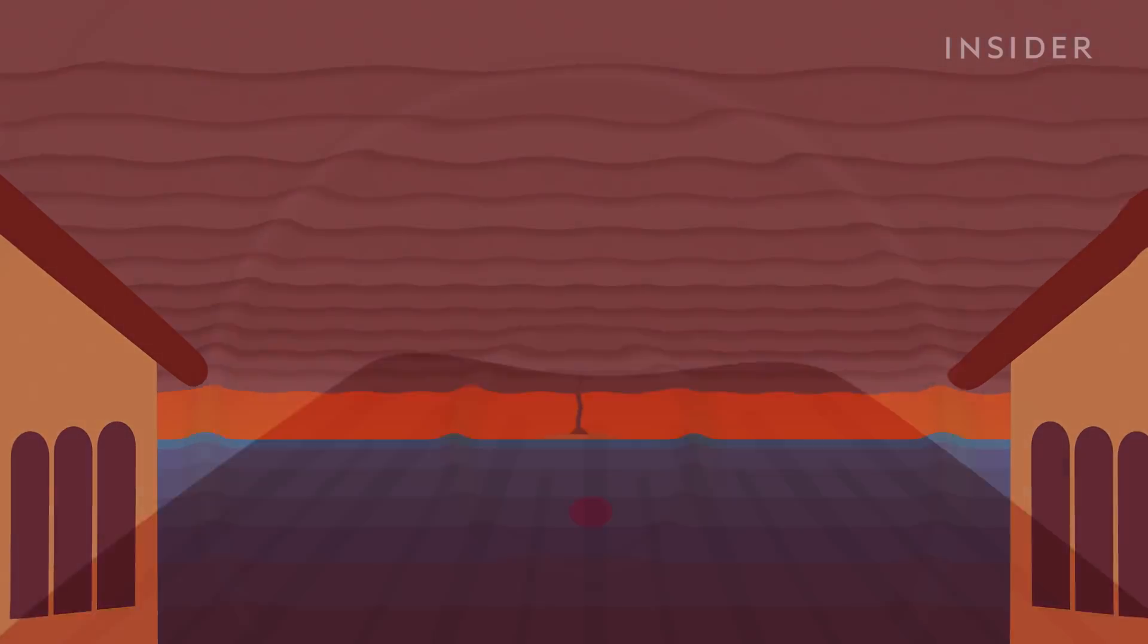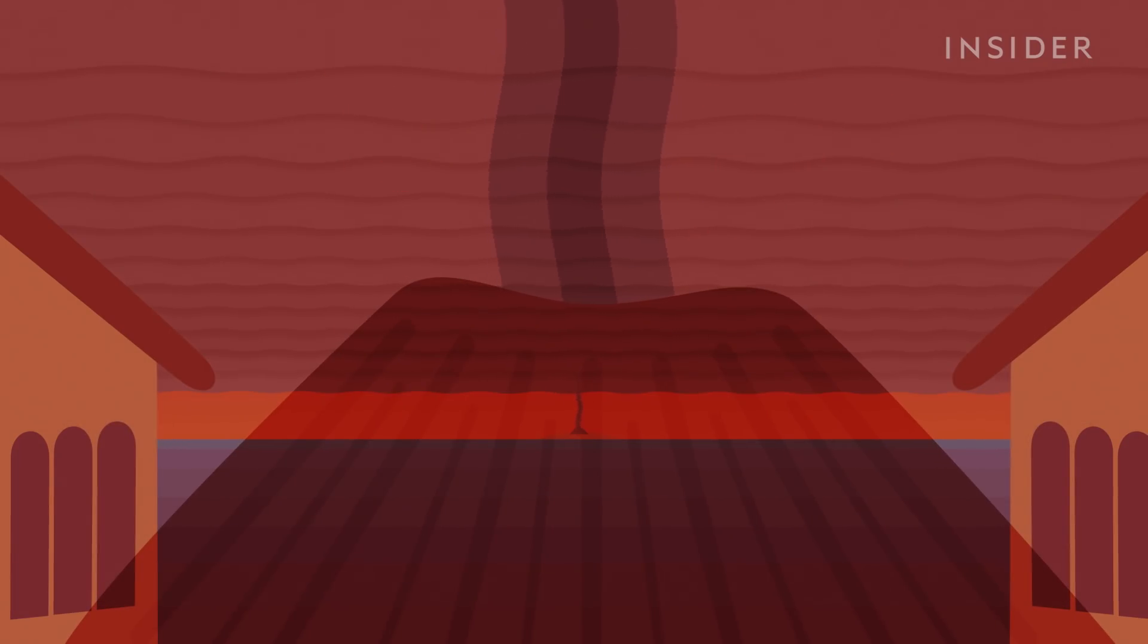And since even the smallest supereruption would dwarf Krakatoa's eruption, there is really no telling how much damage this would cause. But it would be epically catastrophic.